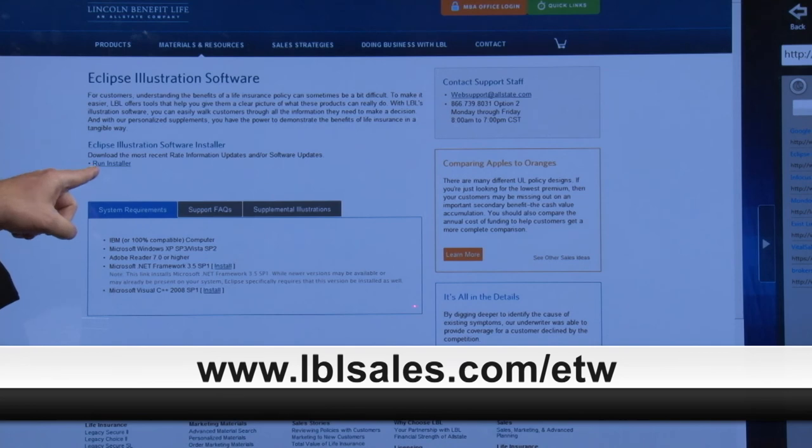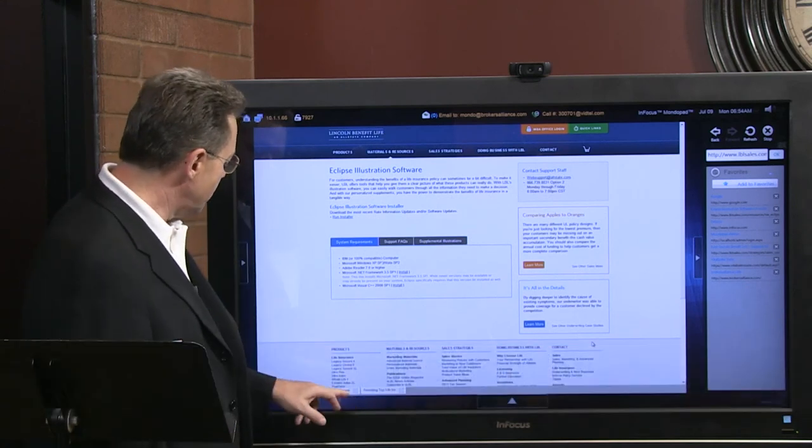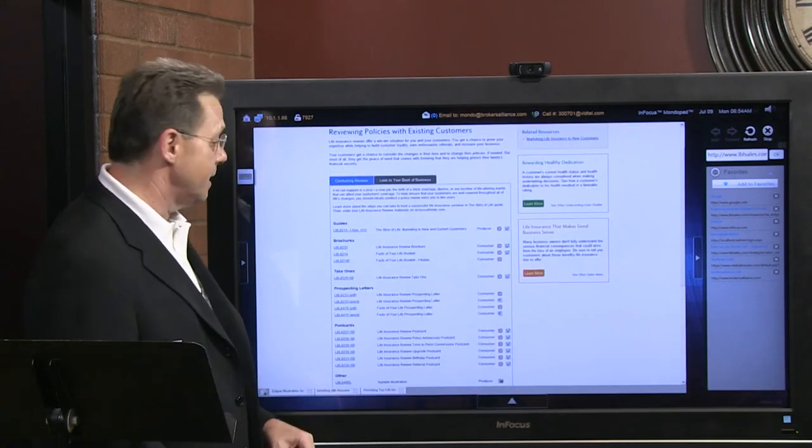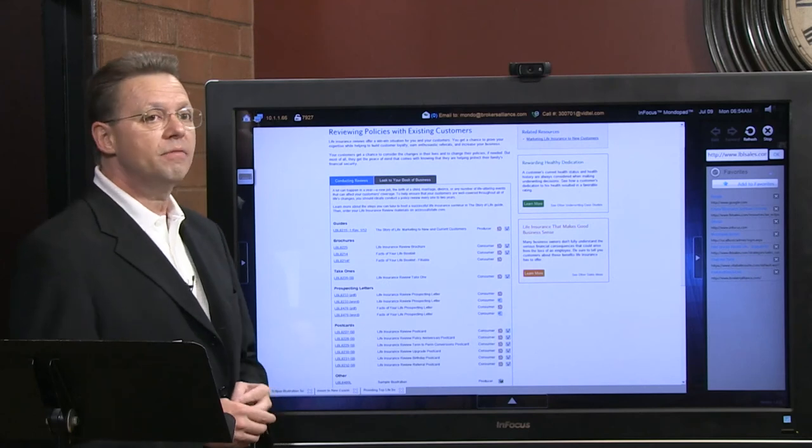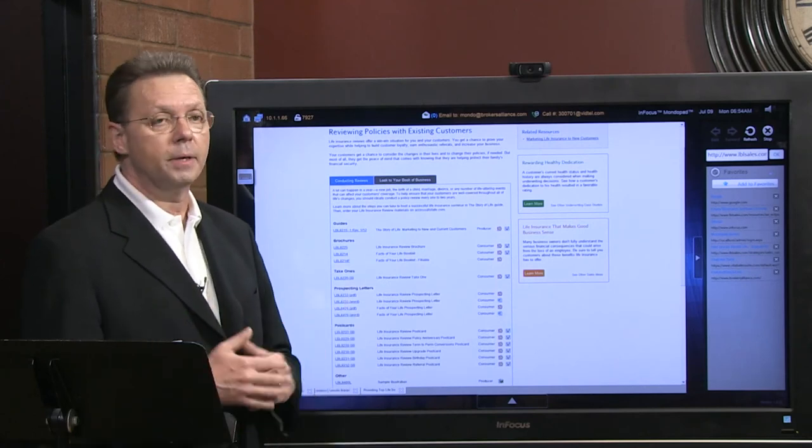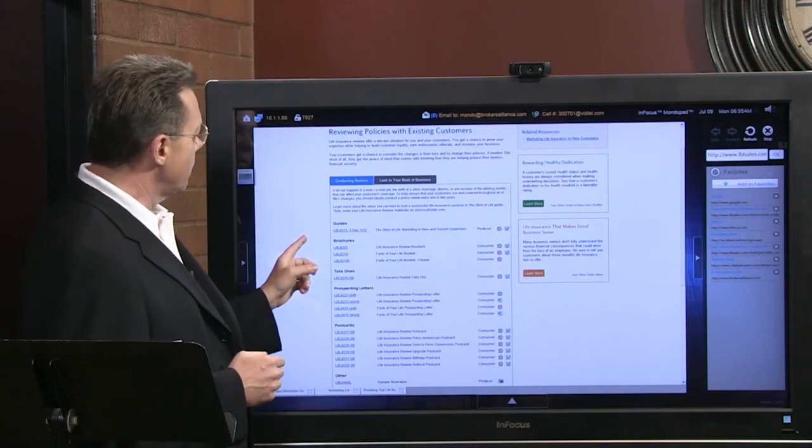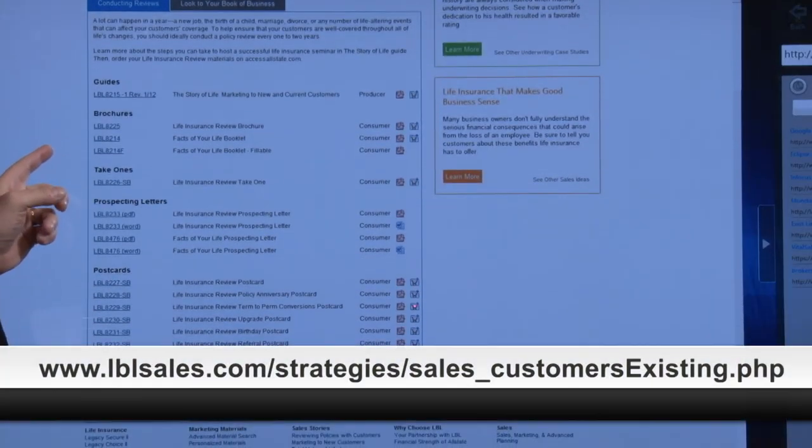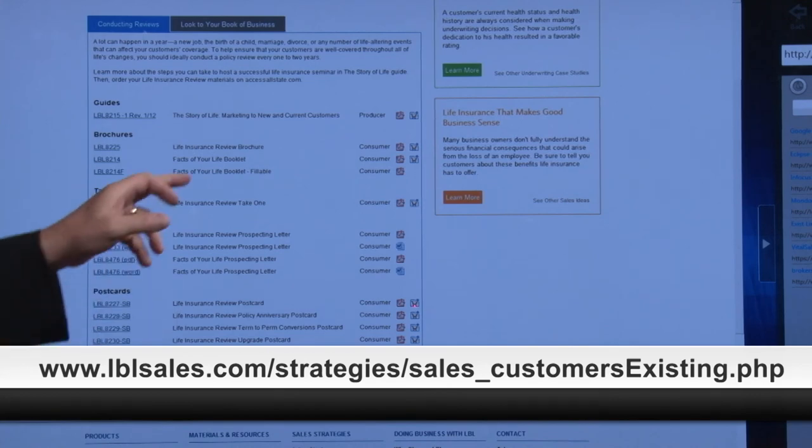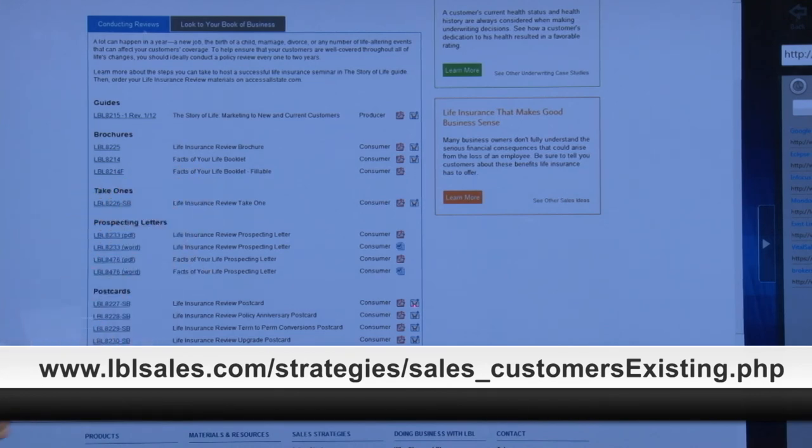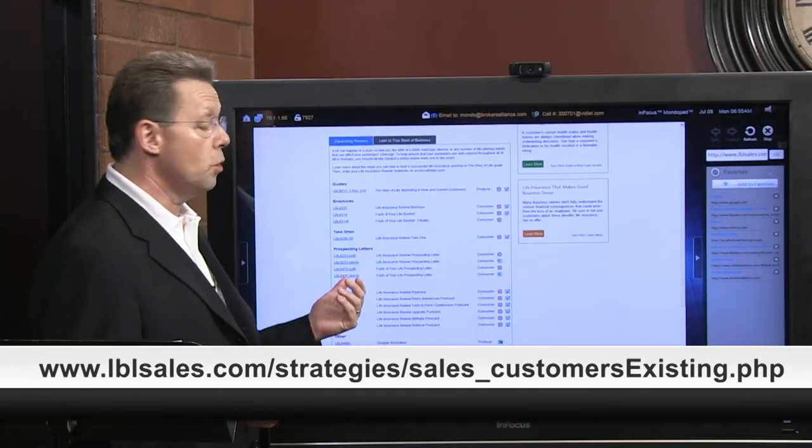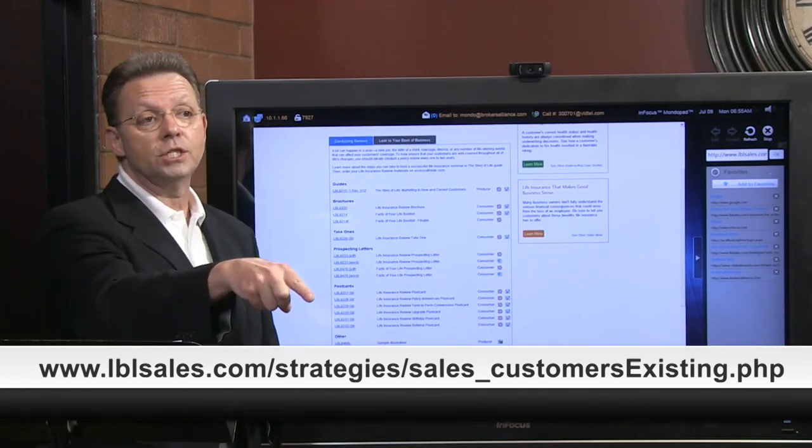Download it right here where it says Run Installer and then you'll be able to go with us in our tutorial. It really helps the learning process. Not only that, but Lincoln Benefit Life and their parent company Allstate has a beautiful reviewing policy page where they have quite a few documents and really good help and assistance. I like the Facts of Your Life booklet, which comes in a book as well as an email attachment.